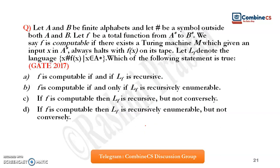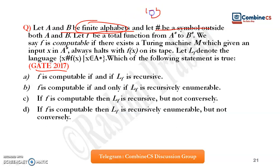So this was all about decidable, undecidable, semi-decidable, recursive, and recursive enumerable language. Now let us understand each concept with a good example taken from GATE 2017. The question states: let A and B be finite alphabets and hash be a symbol outside A and B. Finite alphabet means a boundary is defined — for example, one to five — whereas infinite means like the natural numbers with no defined boundary.